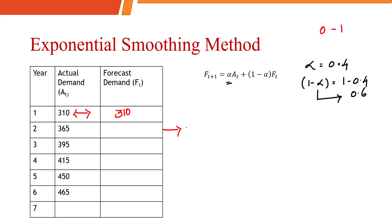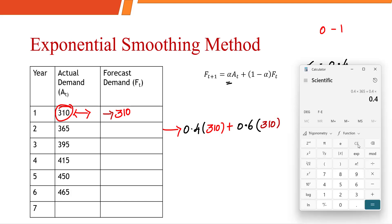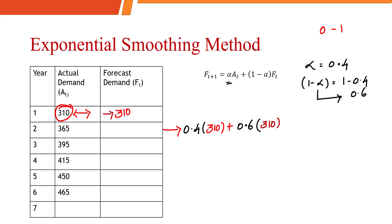In the formula, we have alpha 0.4. The actual demand of the previous year is 310, plus 1 minus alpha (0.6) into the forecasted demand of the previous year, which is also 310. So 0.4 into 310 plus 0.6 into 310 gives us an answer of 310.